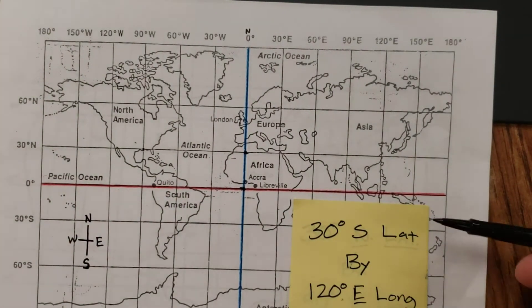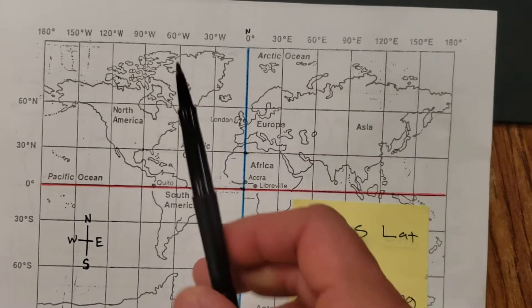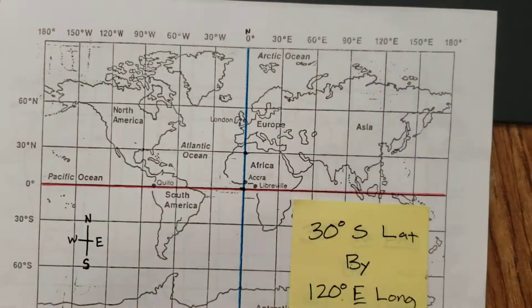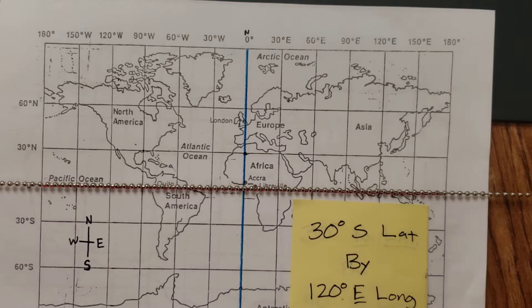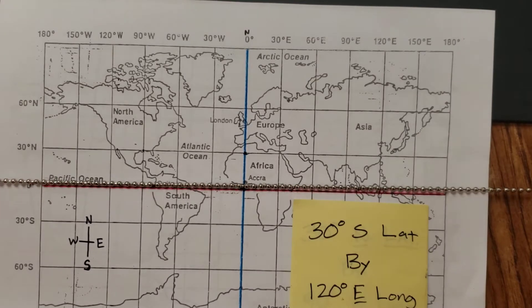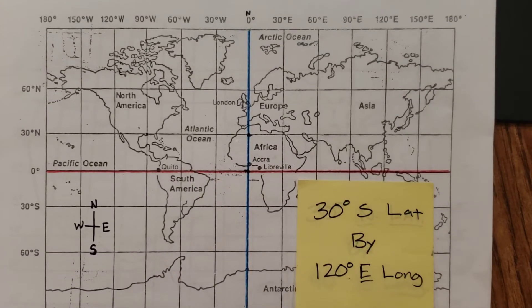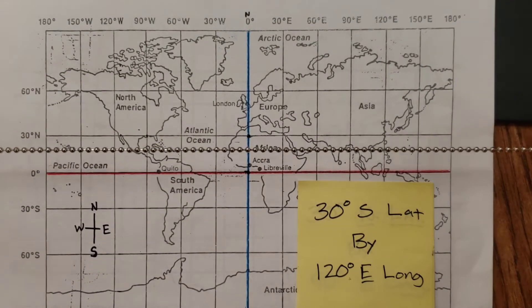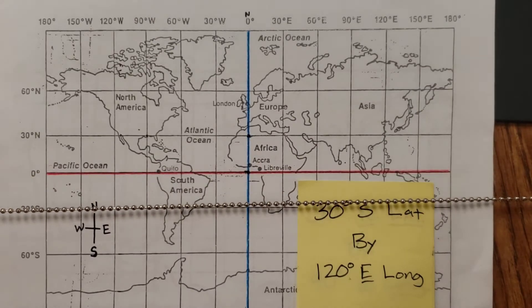Let's do latitude first. So think in your head, which way is latitude? Are these lines or these lines? These ones, like the equator. Equator's latitude. 30 degrees south latitude. Let's see if we can get there. 30 degrees south. So there's zero degrees latitude. 30 degrees south. There it is right there.